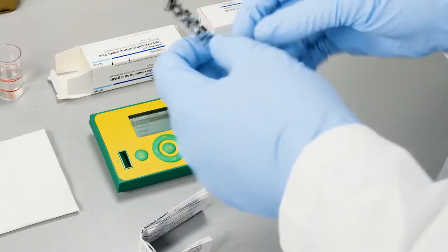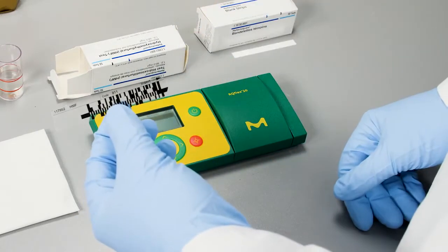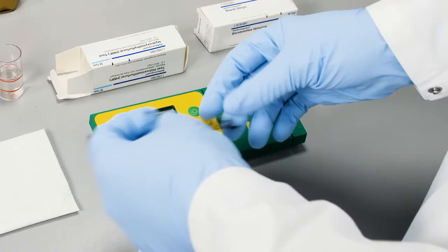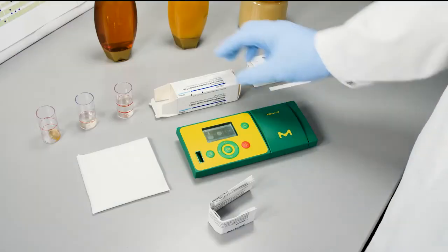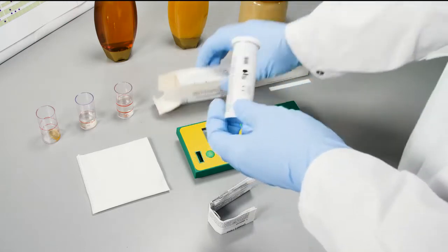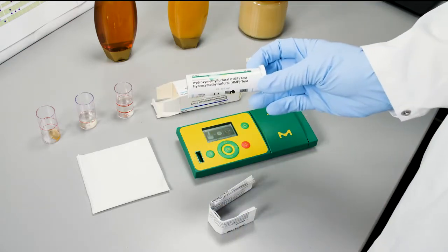Also we find here a barcode that you need to show the instrument which kind of parameter you want to measure, and then we give it here into the instrument. And also we have the box with the test strips for the HMF test.